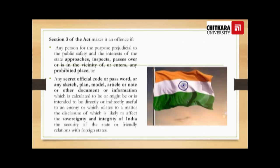Section 3 of the Act makes it an offence if any person, for a purpose prejudicial to the public safety and interest of the State, approaches, inspects, passes over, or is in the vicinity of or enters any prohibited place; or communicates any secret official code or password, or any sketch, plan, model, article, note, or other document or information which is calculated to be, might be, or is intended to be directly or indirectly useful to an enemy, or which relates to a matter the disclosure of which is likely to affect the sovereignty and integrity of India, the security of the State, or friendly relations with a foreign State.